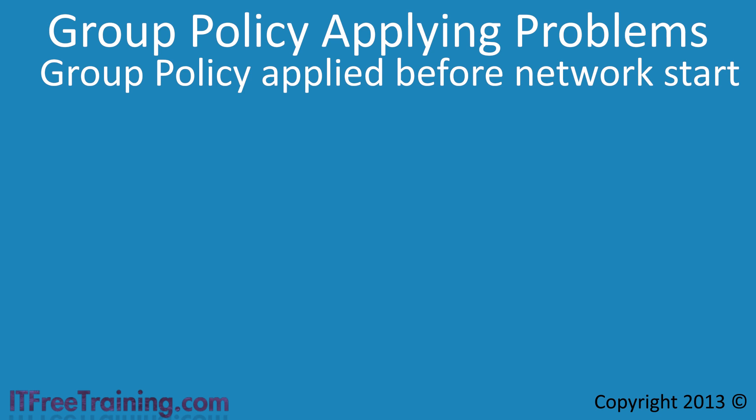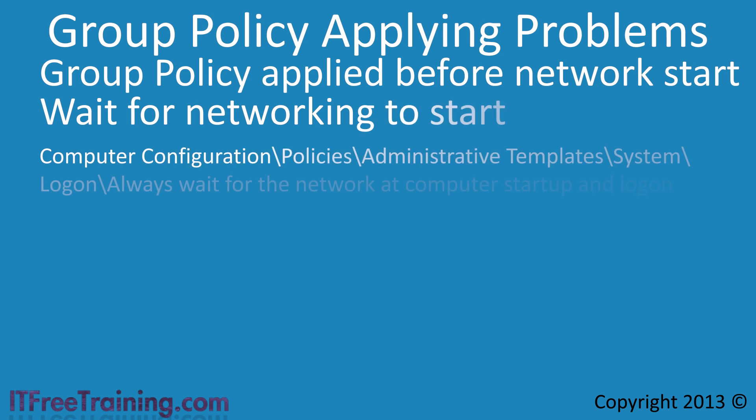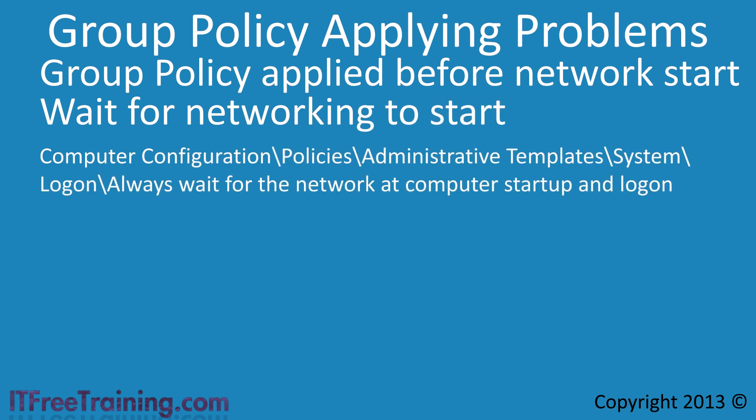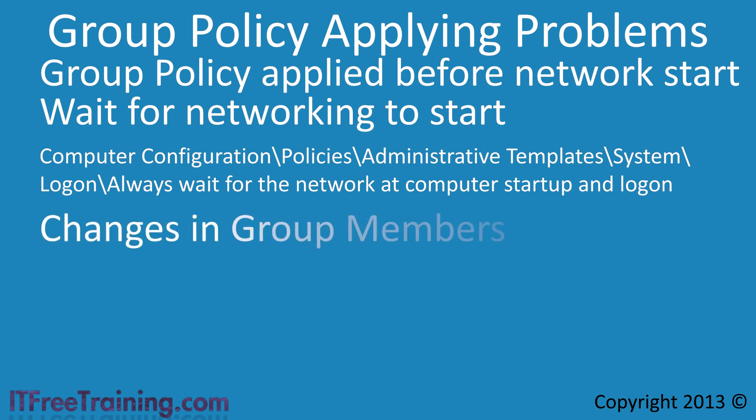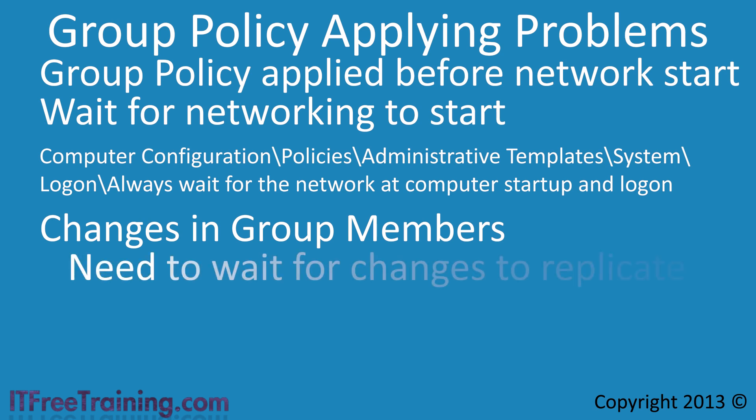In a business environment, it is common for the administrator to want to have changes in group policy happen in a more predictable way. To do this, you can configure group policy settings that effectively force the computer to wait for the networking to start before applying group policy. This gives the computer time to download and update group policy before applying it. If you have made any changes to group membership, these changes will also need to replicate. If you use groups to filter group policy, if the change to group memberships has not replicated it can affect who the group policy is applied to.